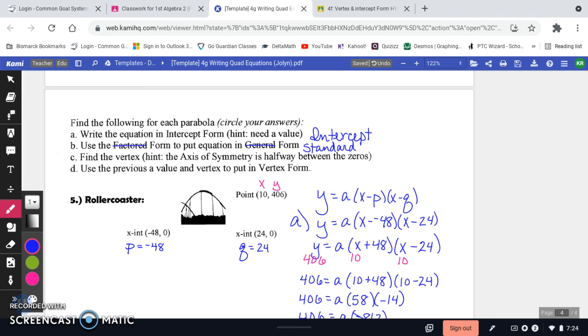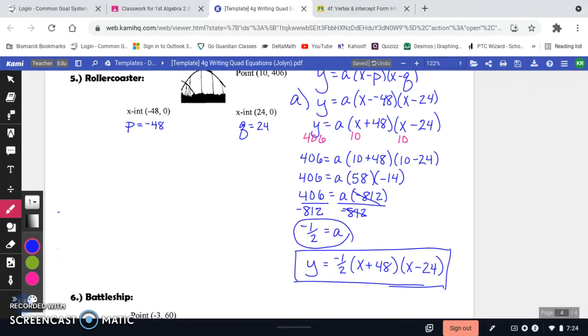So B, use the intercept form to put the equation into standard form. So we did this the other day, where you are just multiplying out your equation. So I'm going to FOIL, and I'm going to leave my negative 1 half, and then I'll do that last. So here, let me rewrite it real quick. So when I FOIL, this is going to be X squared minus 24X plus 48X. And that is a negative 1,152.